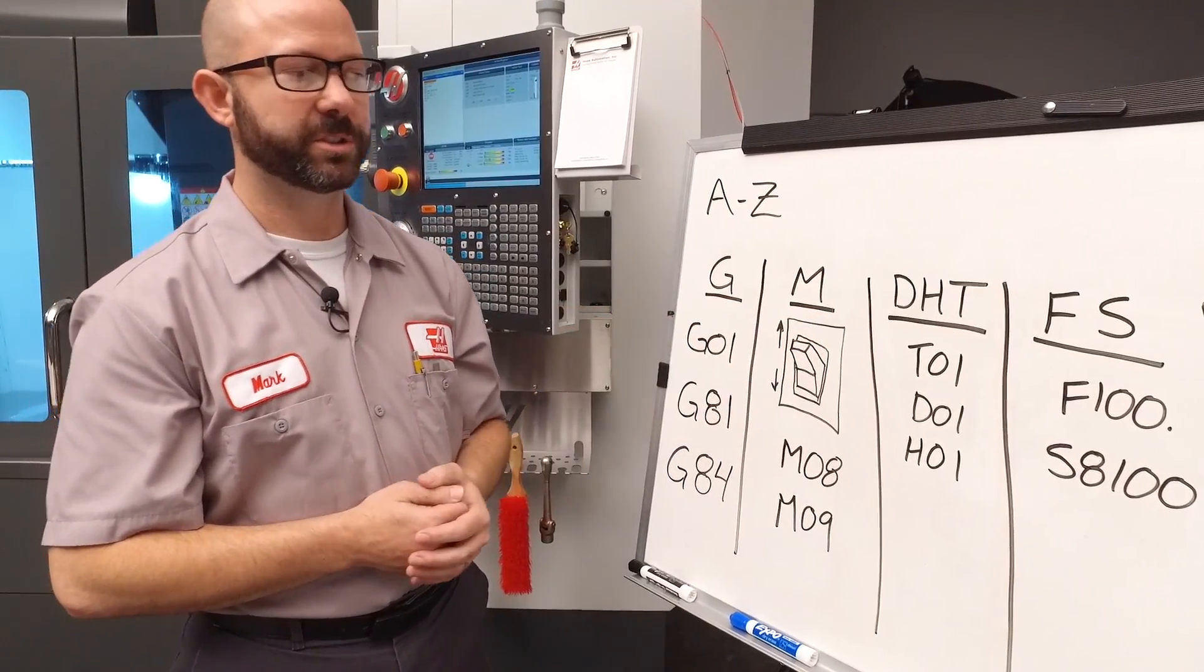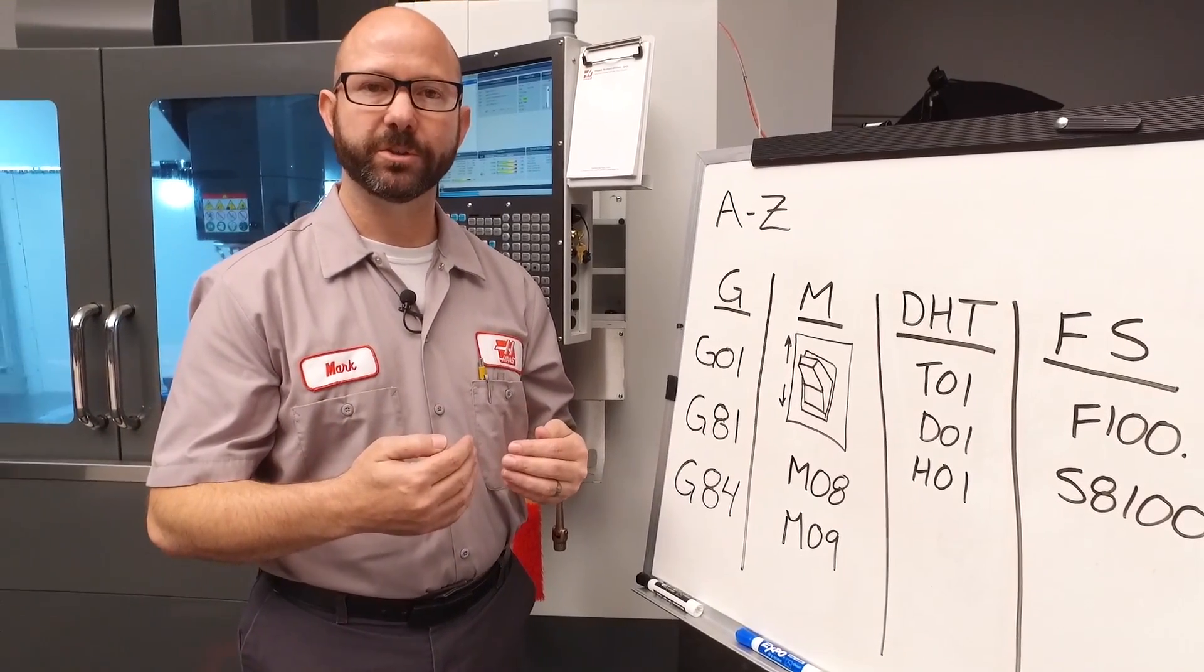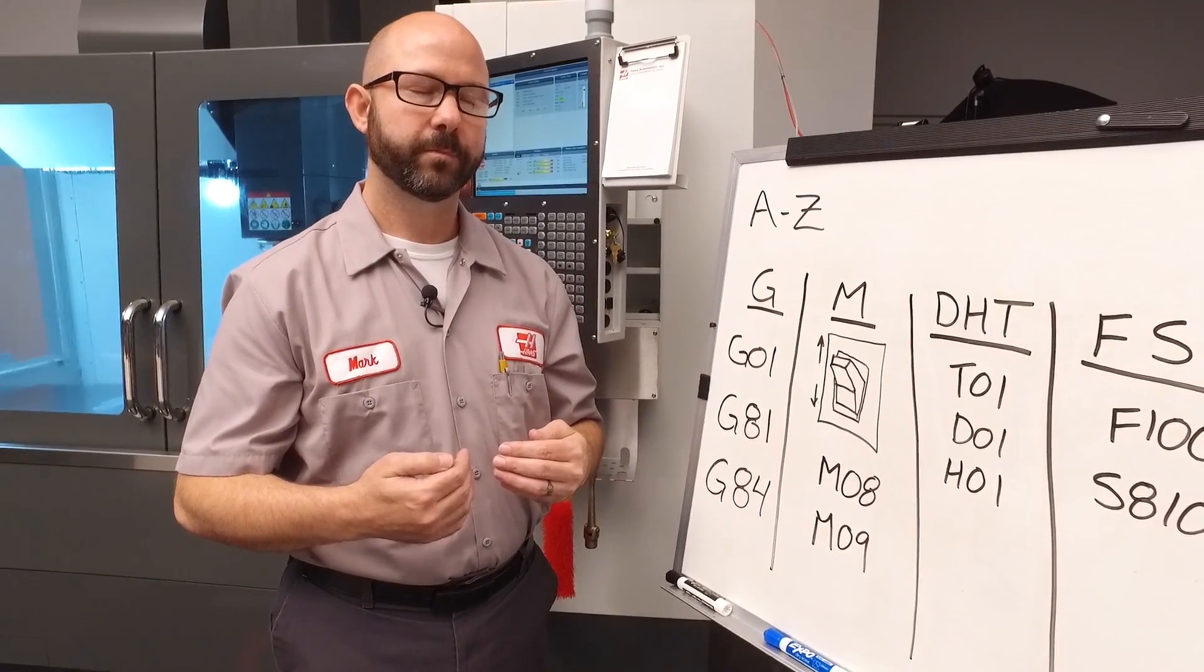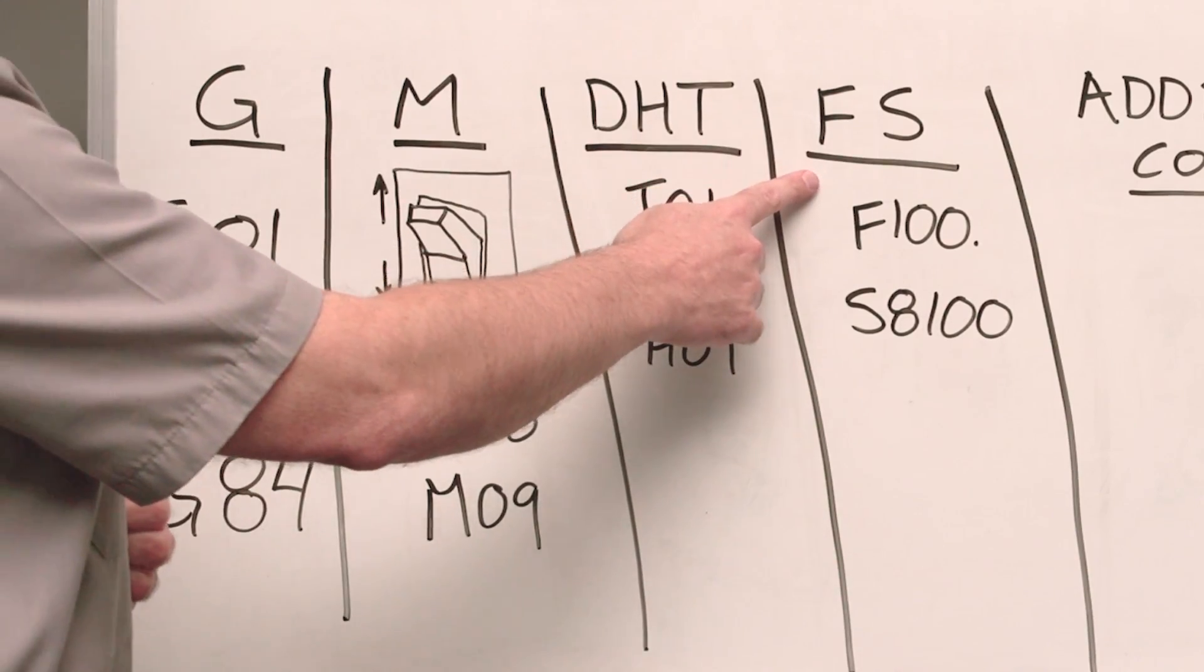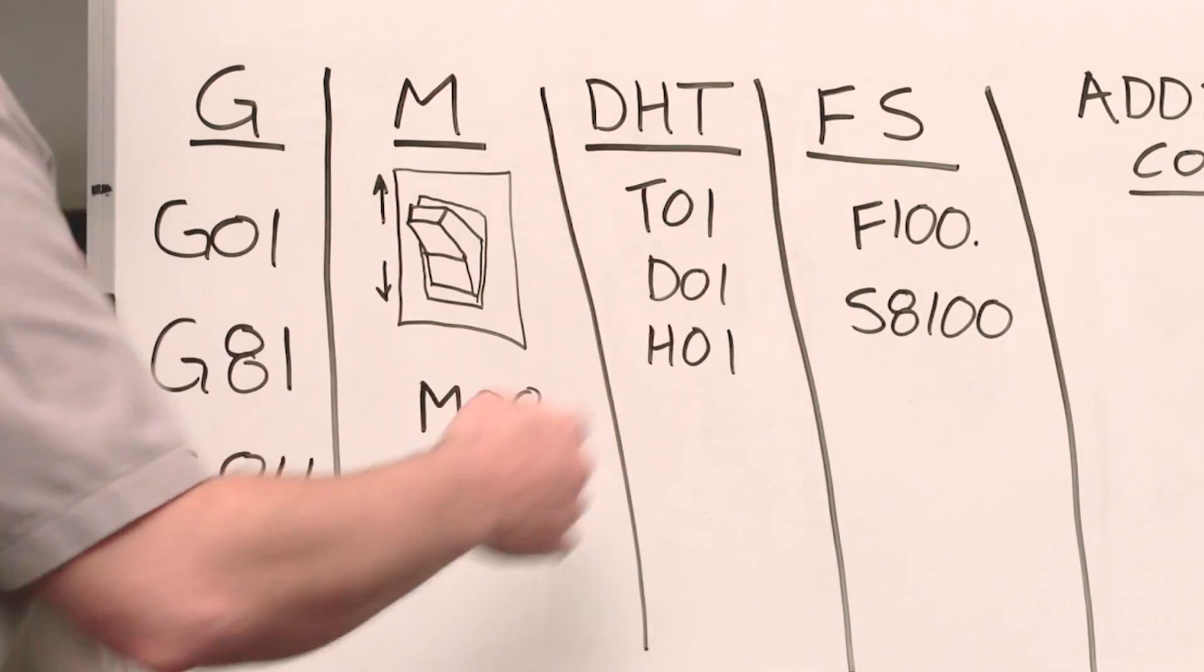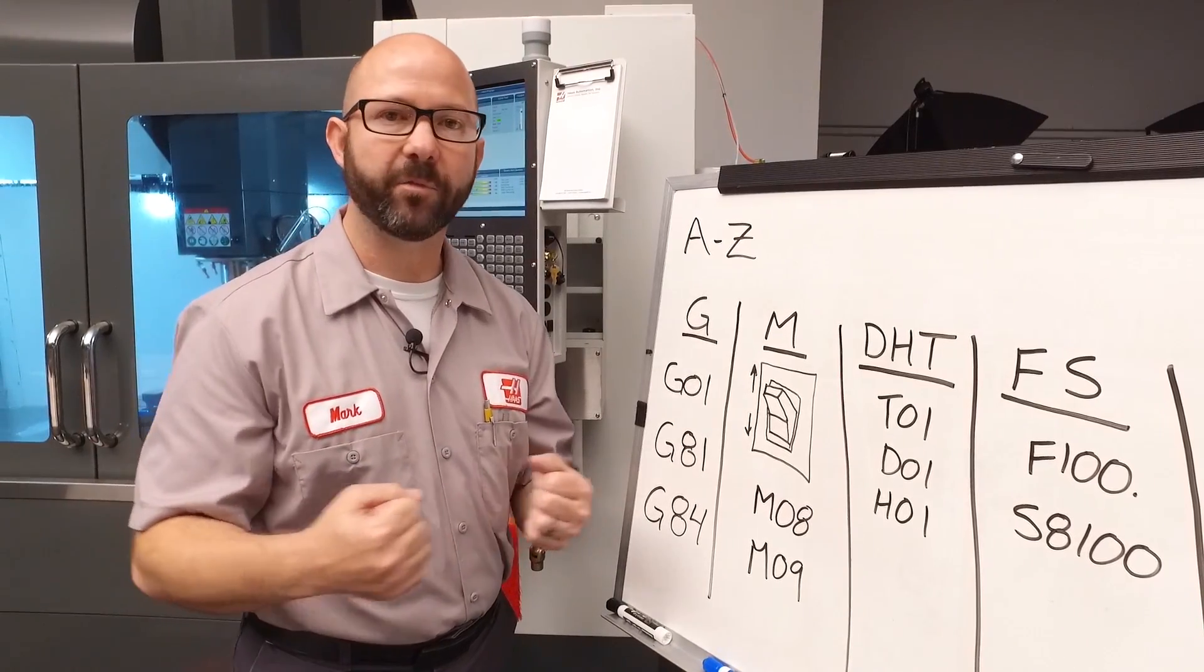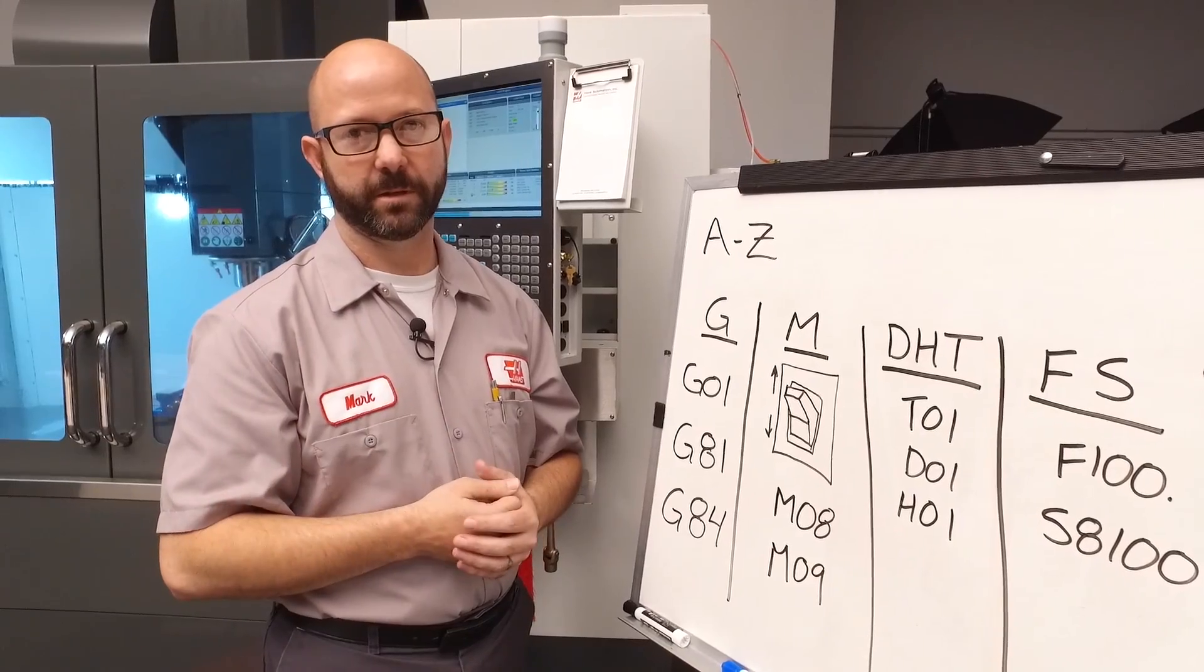Our D, H, and T codes define what tool to use and what offset to use with that tool. Next we have our feeds and our speeds. Those tell the machine how fast to move and at what RPM to run the spindle.